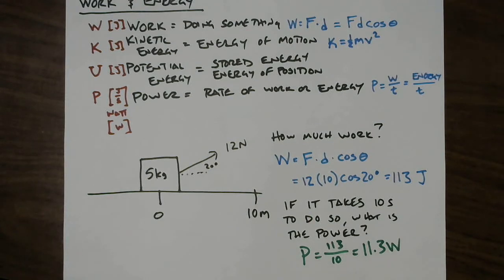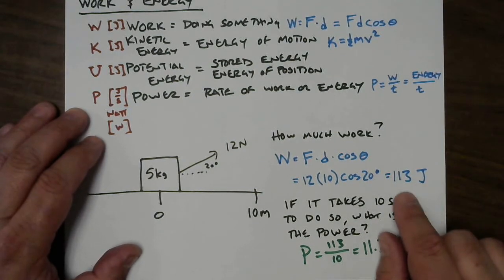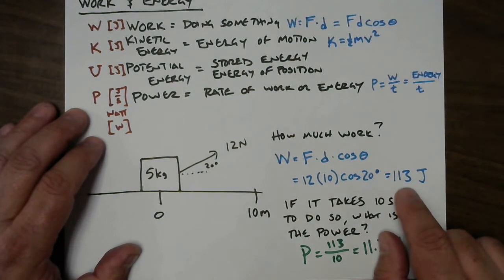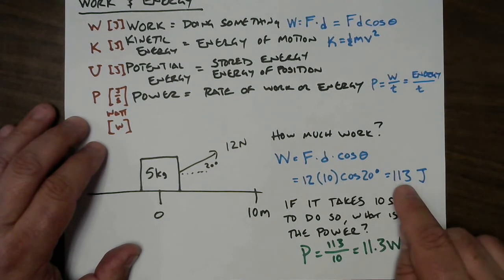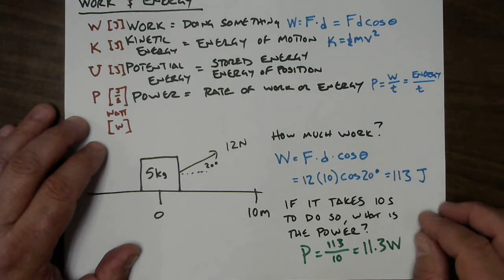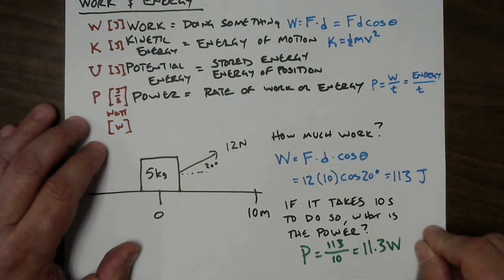We can take this just a little further if we'd like to, but I just want to point out that this is a scalar quantity. It doesn't have a direction associated with it. This is also a scalar quantity because if you divide a scalar by time, which is a scalar, you get a scalar.